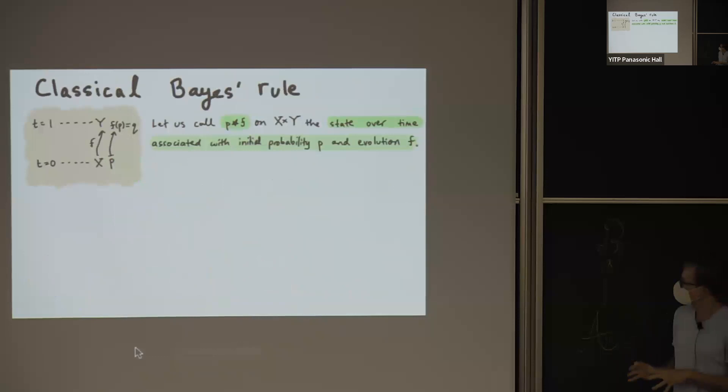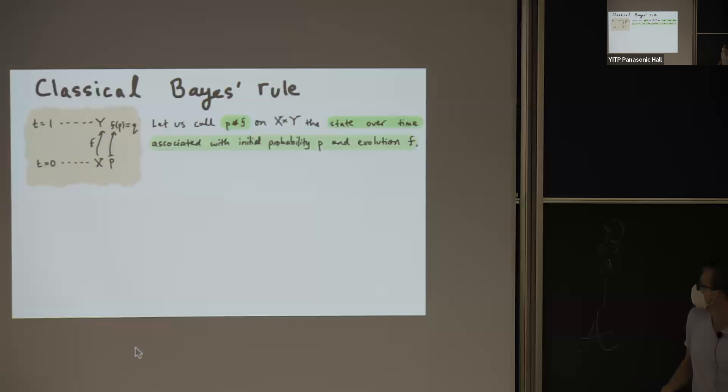So I'm going to call this a state over time, and I'm going to view this dynamical perspective like I just mentioned a few moments ago. So, and another point about this is that what is Bayes' rule from this perspective? What it actually says is that there exists a map in the opposite direction, sort of going backwards in time,